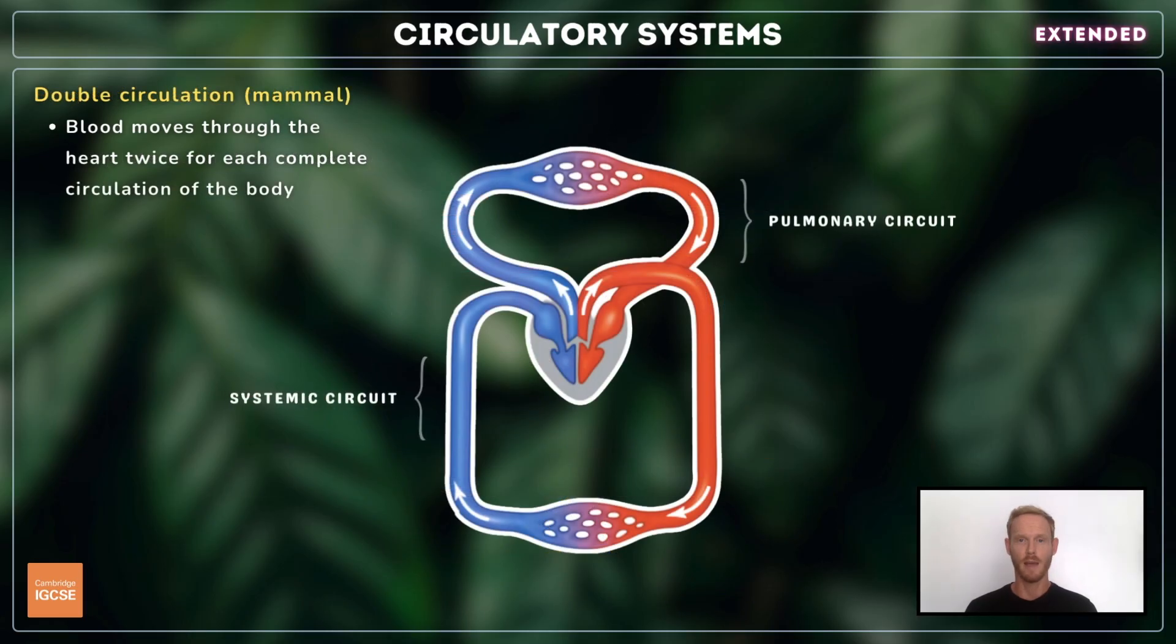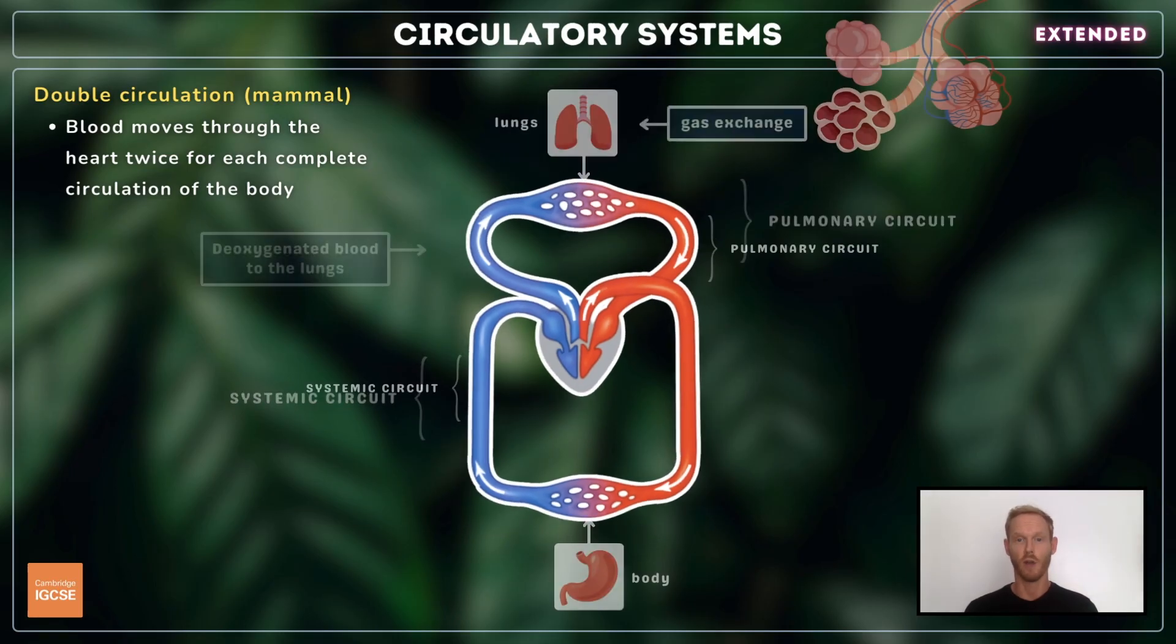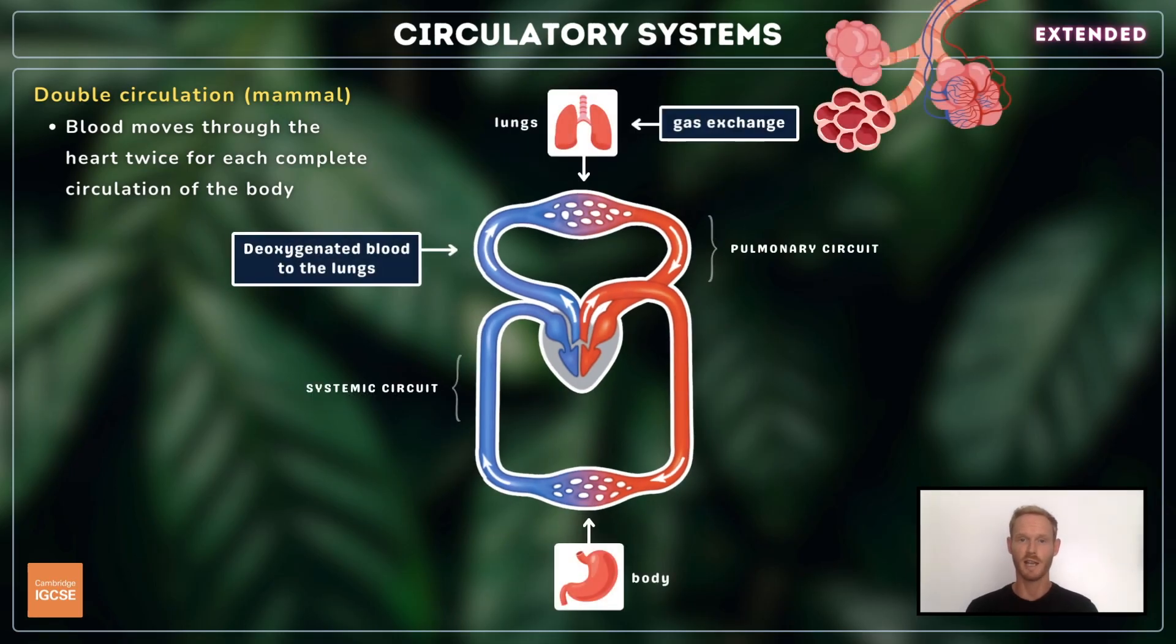The transport system in mammals is known as a double circulation, as blood passes through the heart twice for each complete circulation of the body. The right side of the heart receives deoxygenated blood from the body and sends it to the lungs to pick up oxygen and release carbon dioxide. The now oxygenated blood returns to the left side of the heart, which contracts, sending it off to the body's tissues where the oxygen is unloaded.